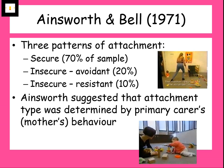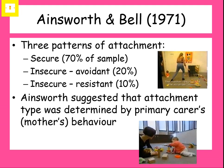Three patterns of attachment were observed. The majority of children were found to be securely attached — 70% of the sample in the original study. 20% were found to be insecure avoidant, and 10% were insecure resistant. These are named on the specification, so you need to be able to describe each of those and recognize what those three attachment types look like.